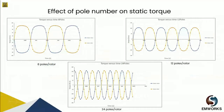These are the static torque results showing the effect of pole number. With a higher number of poles we get higher transmitted torque: approximately 150 Newton-meters at 24 poles versus about 80 Newton-meters at 8 poles. There is a gain from increasing pole numbers, but there may be trade-offs such as increased losses and heat generation, which can also be investigated and studied using simulation.